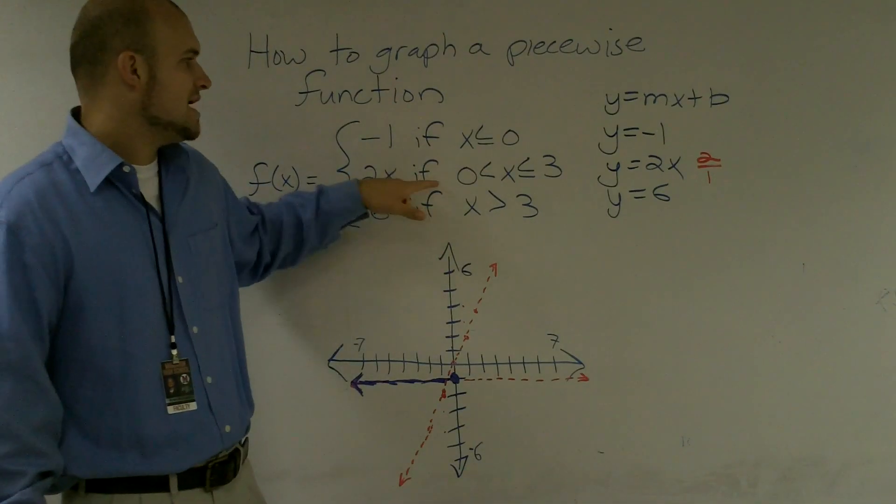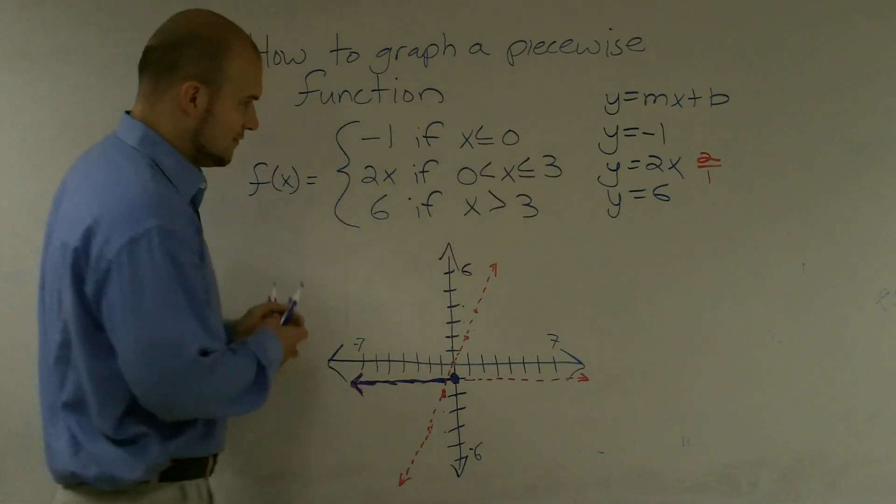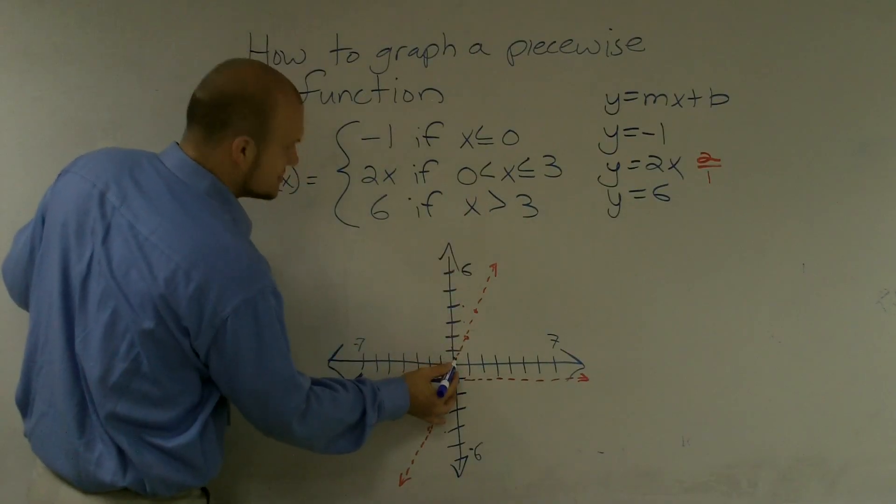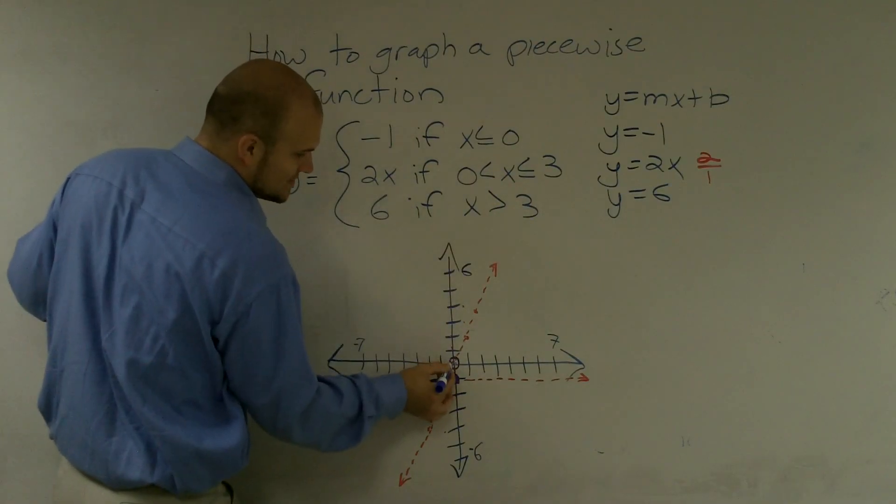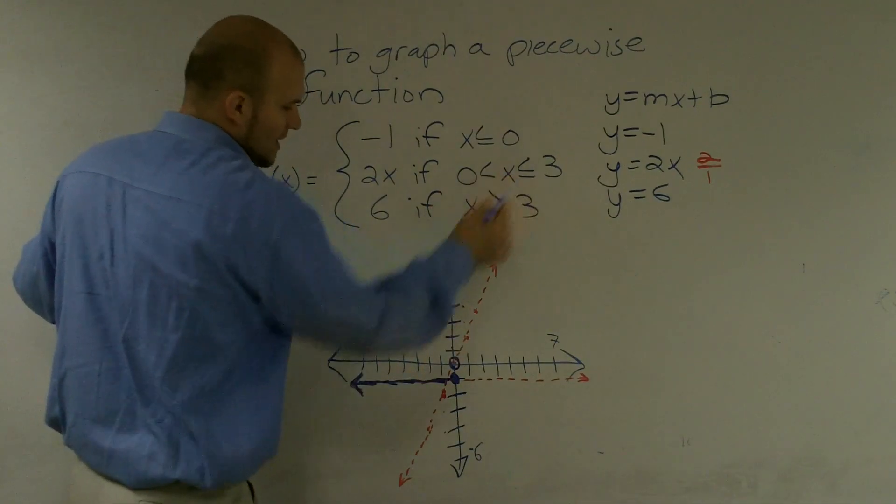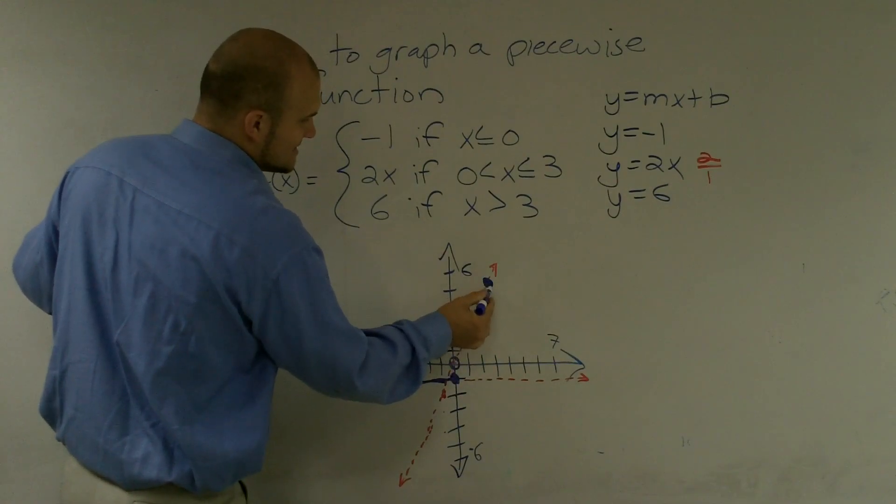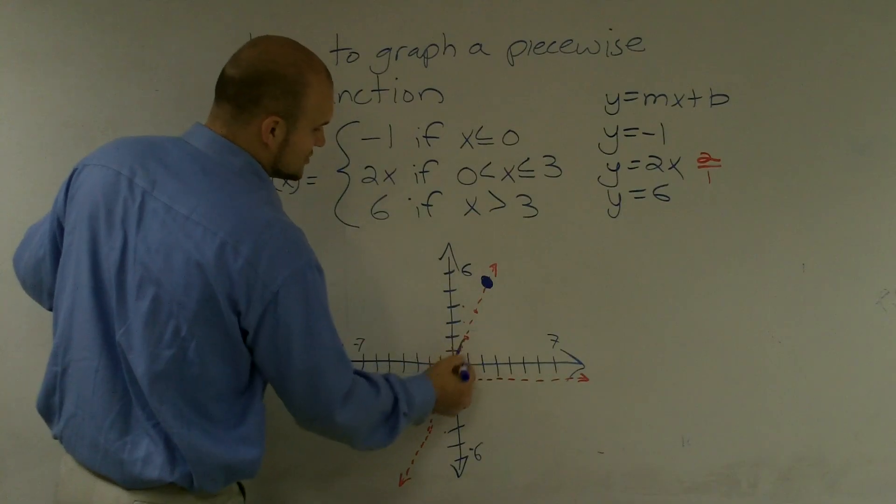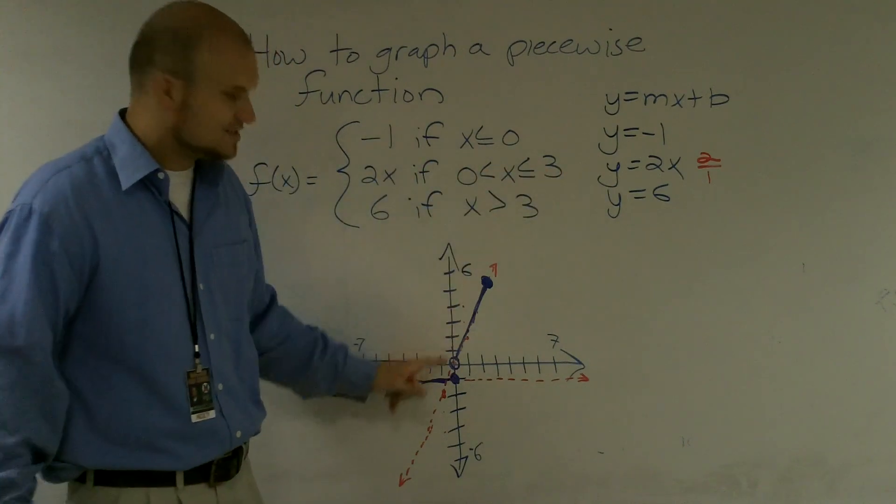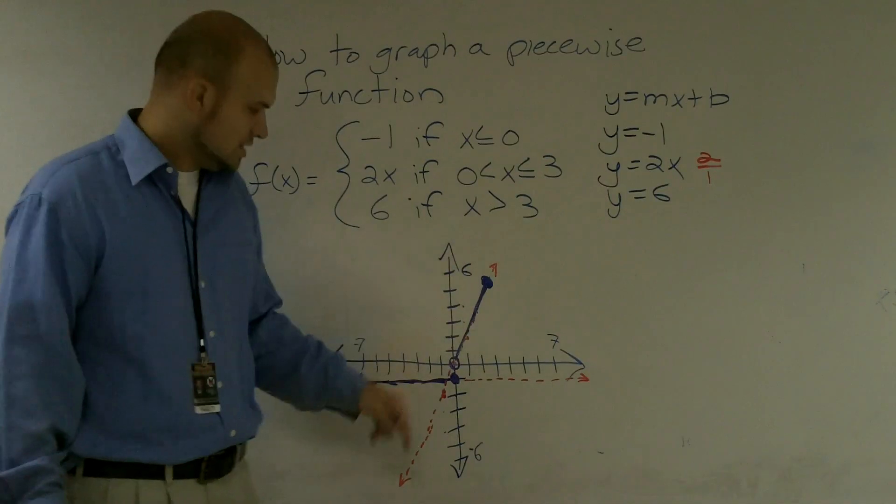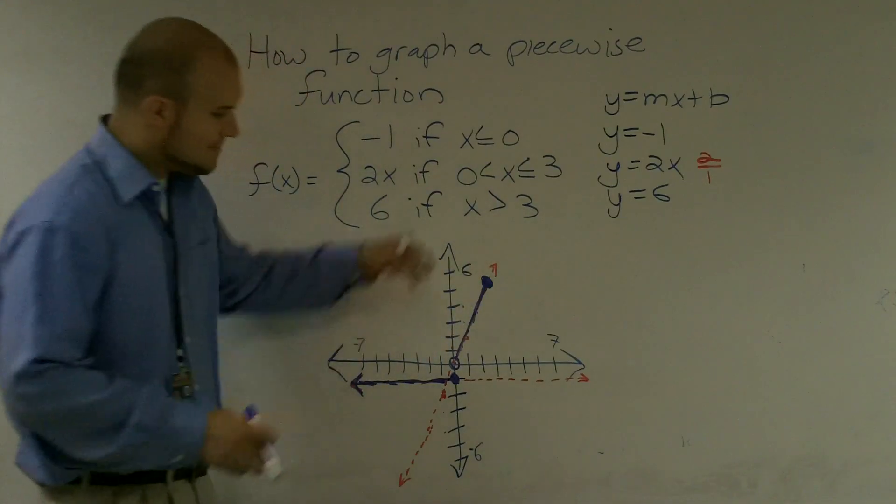Then it says this graph is only true when 0 is less than x or less than or equal to 3. So since it's just less than, since x is greater than, it's going to be an open circle. And it's going to be between 0 and 3. So I'm going to go over 3, 1, 2, 3, and I'm going to follow that up to my graph. And now this is going to be x is less than or equal to 3, so it's going to be a closed dot. And I'm just going to shade in this graph here.